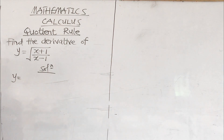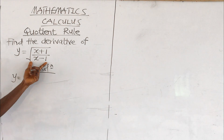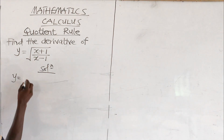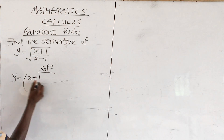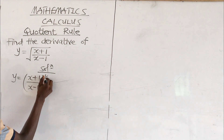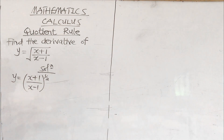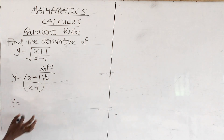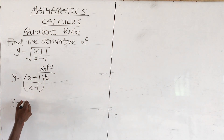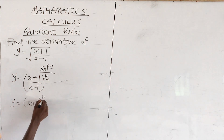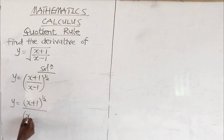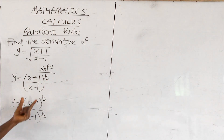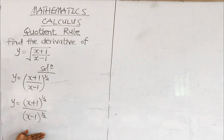Any time an expression like this is given, we can rewrite it as (x plus 1) over (x minus 1), all to the power of one half, because root is the same as exponent half. In that case we get y equal to (x plus 1) to the power half, all over (x minus 1) to the power half. The exponent affects both the numerator and the denominator — this is one application of indices.